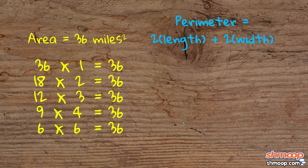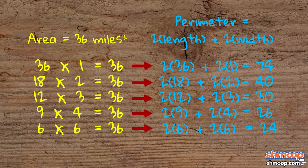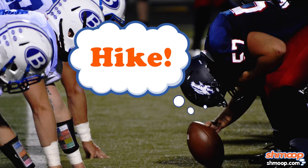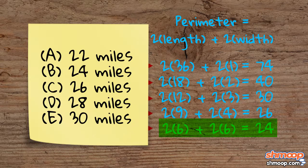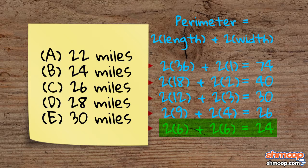Now, here are their corresponding perimeters: 74, 40, 30, 26, and 24. Of these choices, 24 is the smallest perimeter possible. And what do you know about that? It's one of our answer choices. So we're going to go with answer B.